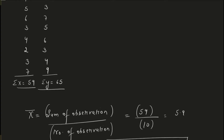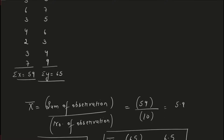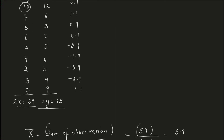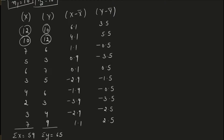For x minus x̄: X value is 12, x̄ is 5.9, so 12 minus 5.9 equals 6.1. Another example: X value is 10, x̄ is 5.9, so 10 minus 5.9 equals 4.1. I'll fill in the rest of the table — you can cross-check. Similarly, for y minus ȳ: Y value 10, ȳ = 6.5, so 10 minus 6.5 = 3.5. Next: 12 minus 6.5 = 5.5.